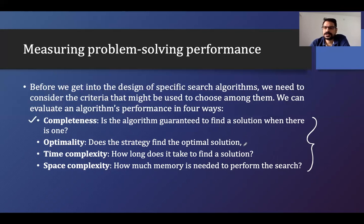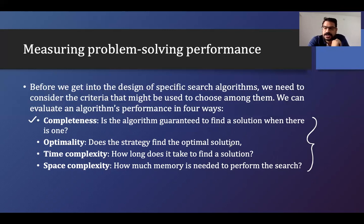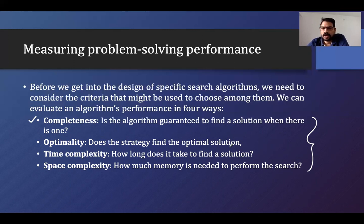Now the next one is optimality. Does the strategy find the optimal solution? The solutions are many. For example, if I want to go to the railway station, I have many paths, many ways, many vehicles. Which particular vehicle and which particular way I choose so that I reach the solution in an optimal way — that is called optimality. Whether my algorithm is optimal or not; if it is giving me the best solution, then only I can say that my algorithm is optimal.